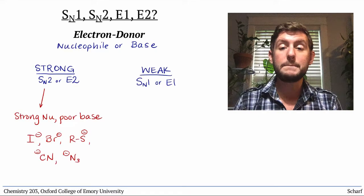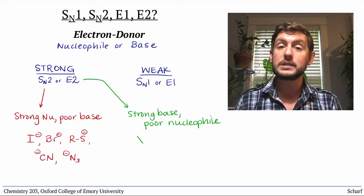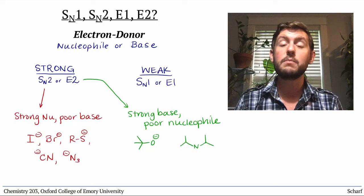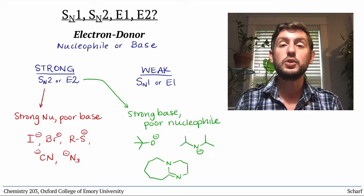Strong, bulky bases that are poor nucleophiles include t-butoxide, the diisopropyl amide ion, a reagent that we'll see more in a few weeks, and DBU. These favor E2 reactions.